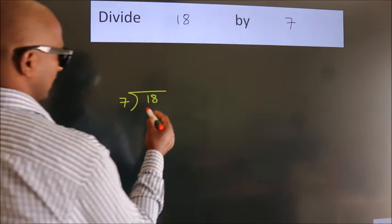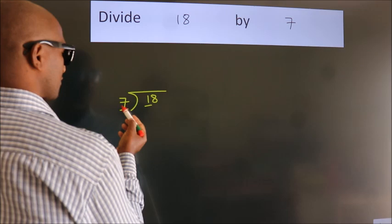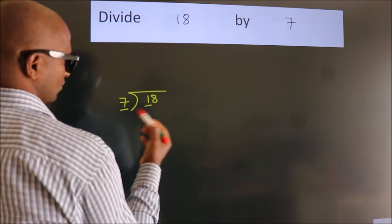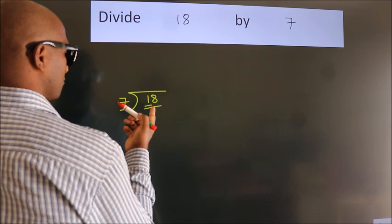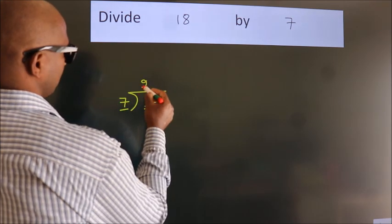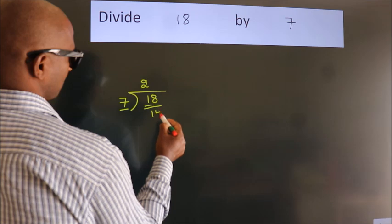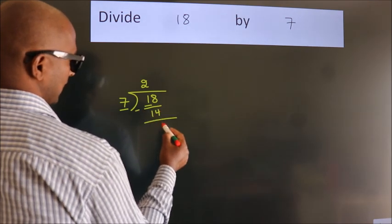Next. Here we have 1, here 7. 1 smaller than 7. So we should take two numbers, 18. A number close to 18 in 7 table is 7 twos, 14. Now we should subtract. We get 4.